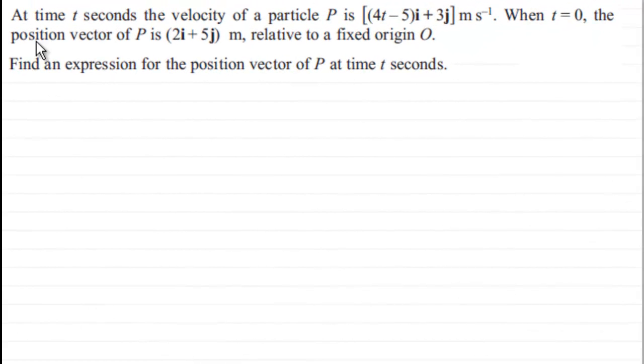Now for this question, just to recap, we've got at time t seconds the velocity of a particle P is (4t - 5)i + 3j meters per second. And when t equals 0, the position vector of P is 2i + 5j meters relative to a fixed origin O. And what we've got to do is find an expression for the position vector of P at time t seconds.